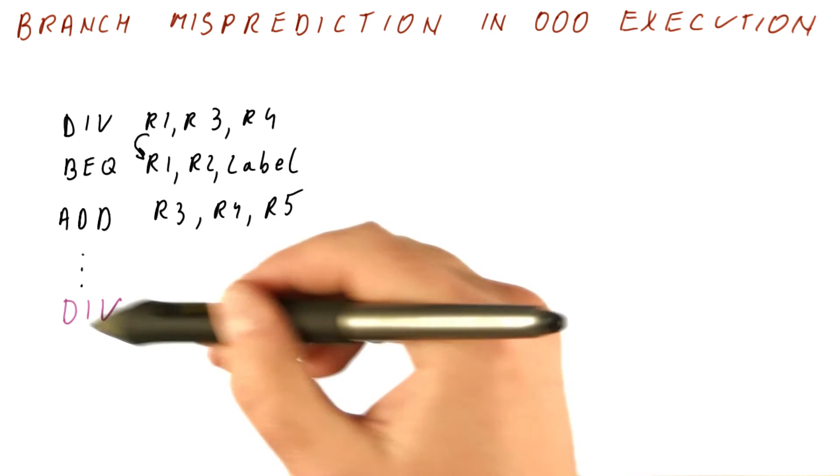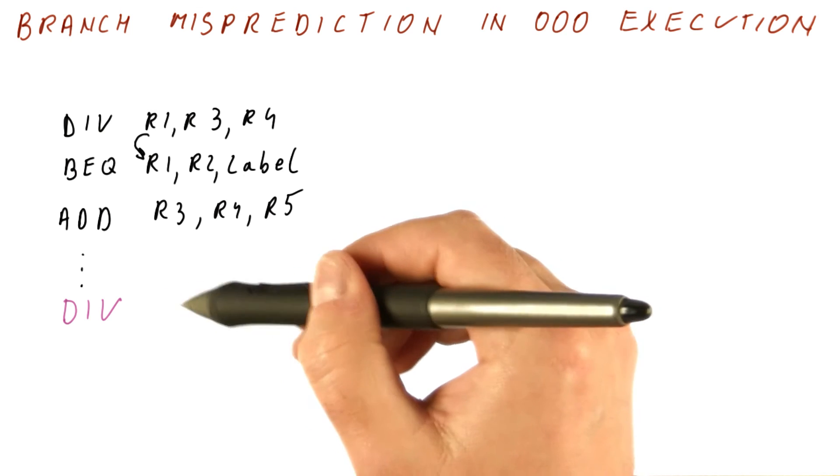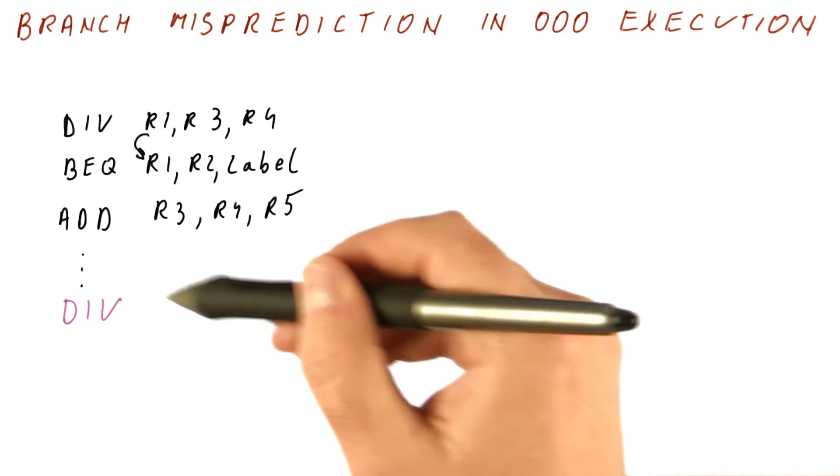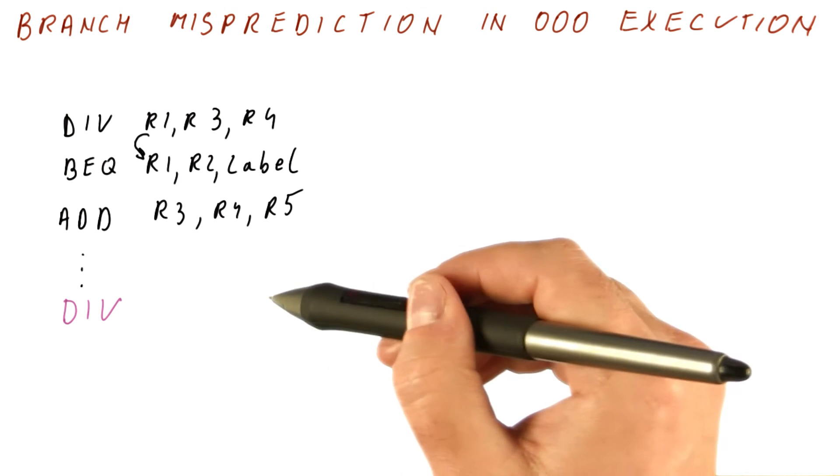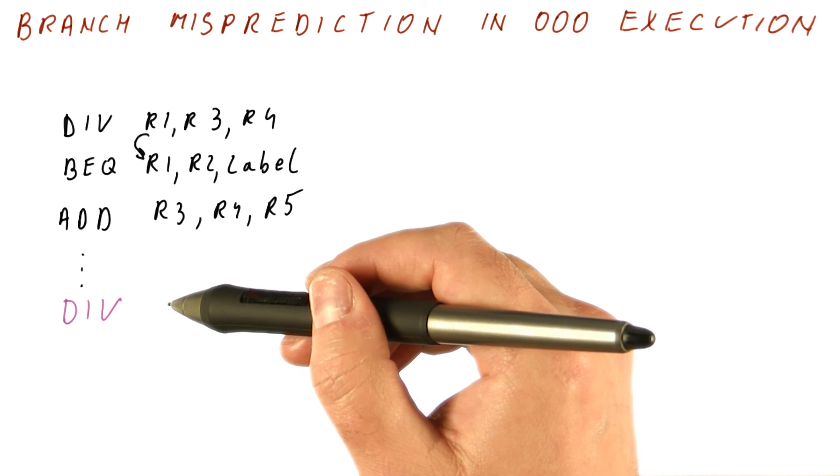So when we come back, we have now a problem of basically, we have already started exception processing for this. We have done everything for this exception by the time we realize that it's too late. So again, we have to somehow take care of not having exceptions until we are sure that they should happen.